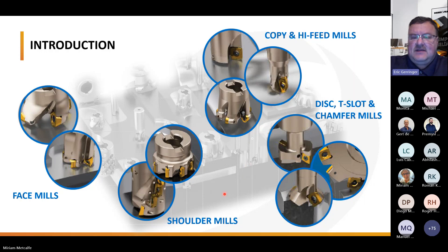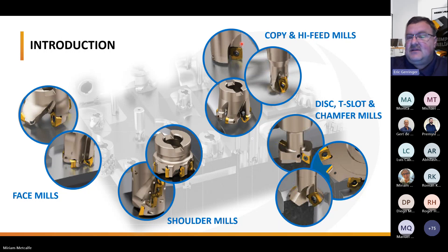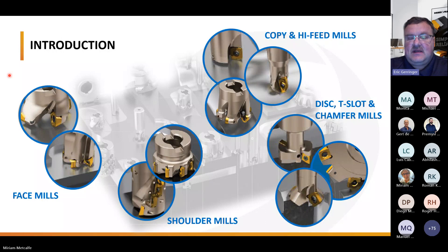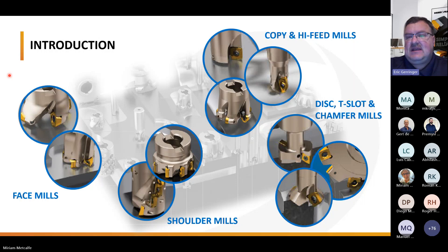Another area to focus on is copy mills and high-feed mills, which share a lot of similarities and common features. Copy mills are typically used for die and mold work or profiling 2D and 3D surfaces, usually with round inserts at varying depths of cut. High-feed mills typically use inserts that are square or an odd shape with a large radius on the end — mimicking a round insert but giving you more stability in the pocket.